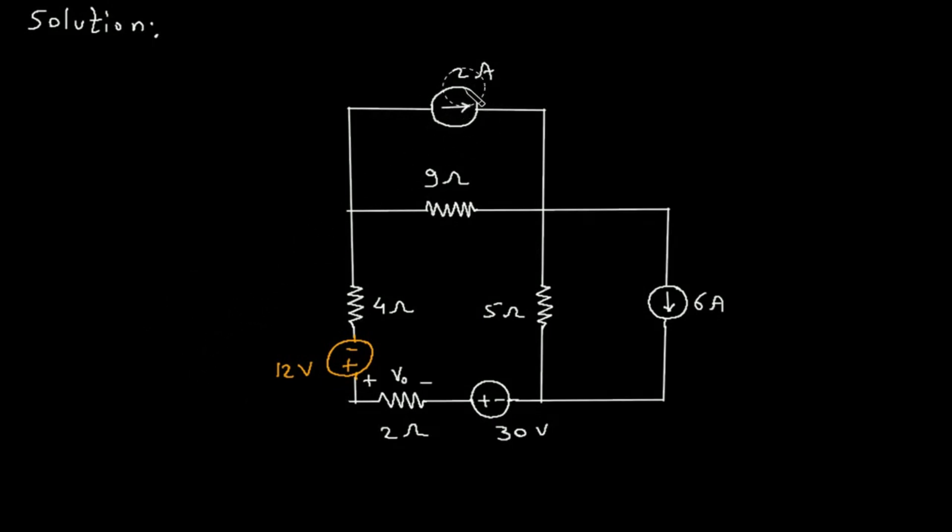Now we will convert this current source into its equivalent voltage source. So here, this will be 2 times 9, which is 18, and the polarity will be like this. So 18 V.